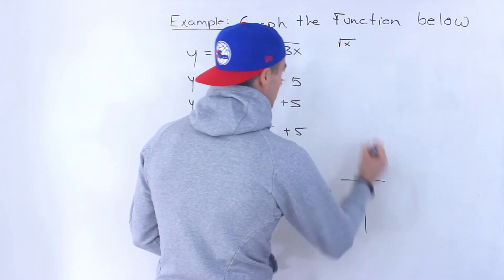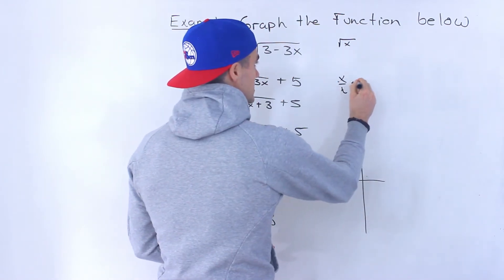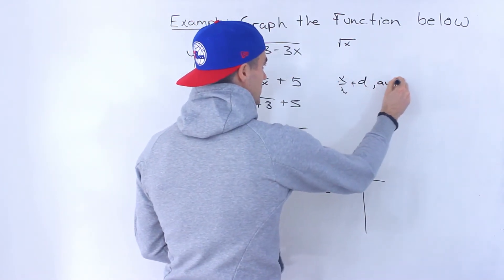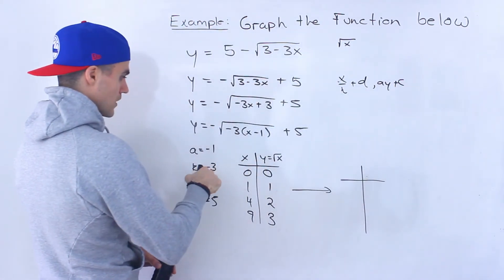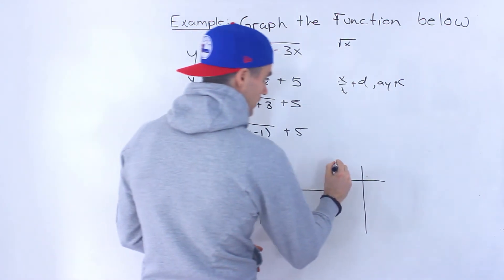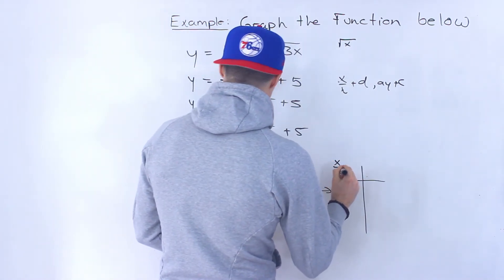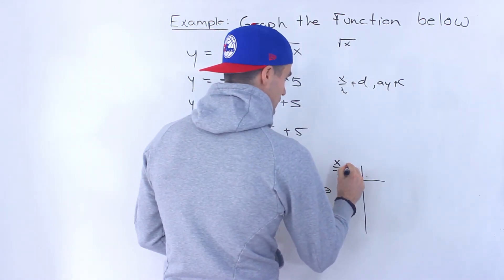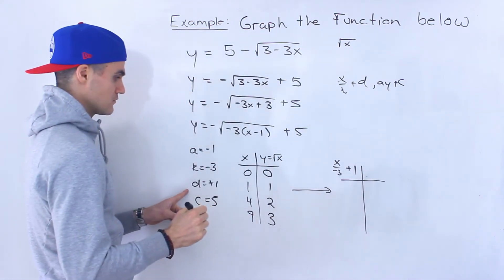So remember, what's the formula? x over k plus d, a y plus c. So all these x values we're going to divide by the k value of negative 3, and then we're going to add the d value which is positive 1.